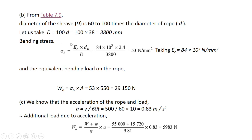Now we will calculate the bending stress using the standard expression. Here E_R is 84 GPa for steel wire. We know the values of d_w and capital D, and putting all these parameters into the expression, the value of sigma_B comes out to be 53 N/mm². The equivalent bending load on the rope is calculated by multiplying this bending stress by the net cross-sectional area of the rope, which is 550 mm², giving the equivalent bending load.